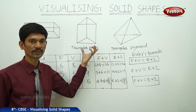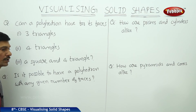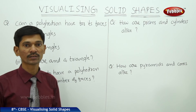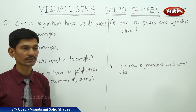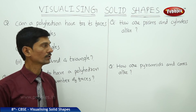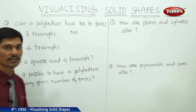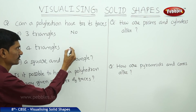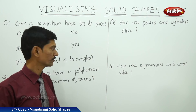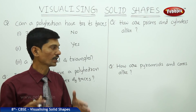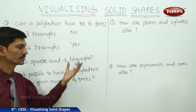Can a polyhedron have three triangular faces? No — we cannot form any polyhedron with only three triangular faces, as there is no polyhedron having only three lateral faces. With four triangular faces, yes — a polyhedron can be formed. With a square and four triangles: yes, we can form a polyhedron with a square base and four triangular lateral faces, like a square pyramid.